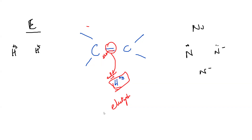Can a nucleophile have a partial negative charge? Yes, but it usually does not happen. The reason is that because the species is more electronegative, instead of remaining partial negative it pulls the electron fully and becomes completely negative rather than partial negative. So practically it does not occur to have a partial negative as a nucleophile.